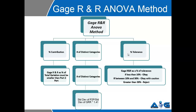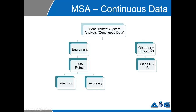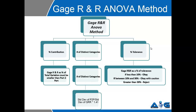Now, the next thing that you would do — like we discussed earlier — if you want to validate both your operator and your equipment, you use a method called gauge R&R ANOVA. Several other methods are available, but we are talking about gauge R&R ANOVA here. The gauge R&R ANOVA method essentially looks at three important parts of the answer that it gives you: A, percentage contribution; B, number of distinct categories; and C, percentage tolerance. It gives you a value of gauge R&R as a percentage of total variation.